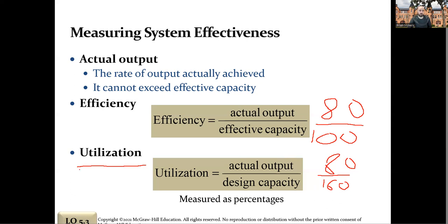Utilization helps inform other decisions too. For example, at a poker room I managed, we looked at whether to expand. During peak hours we were at capacity, but other times we were only using half the tables. So we could either build more tables and expand the walls, or run promotions to shift business into lower-peak hours. That's the kind of decision utilization data helps with.